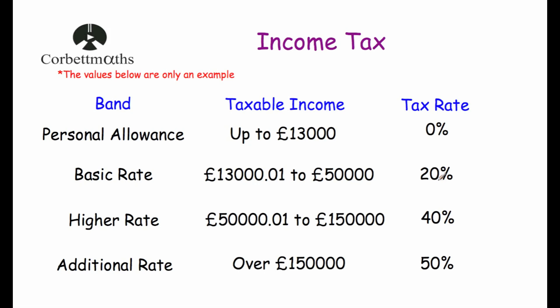Then there's the higher rate of tax for people that earn between £50,000 and a penny up to £150,000, and they'll pay a tax rate of 40%. And then there's the additional rate for people that earn over £150,000, and they'll have to pay a tax rate of 50%. So these are example tax bands — they're not the real figures but they're pretty close at the minute, though this could change in the future.